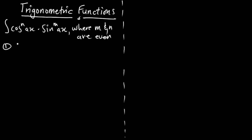For example, if we have the integral of sin²x and cos²x, we can see that both powers are even. How do we do the integration? For questions like this, we have to first be clear about the trig identities.